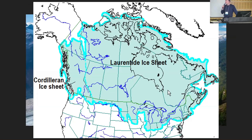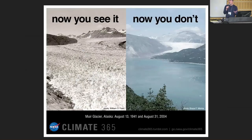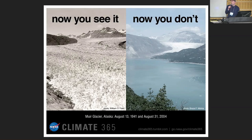20,000 years ago the Laurentide Ice Sheet extended down to about Long Island Sound. About 15,000 years ago it had retreated — it melted. When a glacier retreats, it doesn't pick up its bags and walk away; it melts. You often get lakes or run-off in rivers. This image of the Muir Glacier in Alaska gives a sense of what it looked like around here when that glacier left: there was a lake.